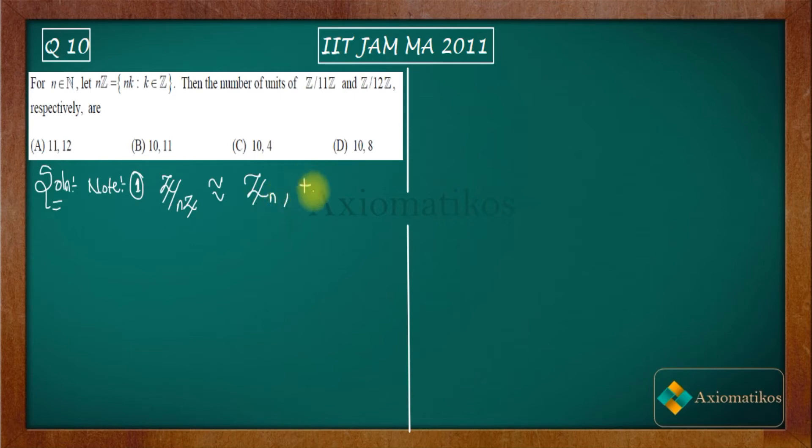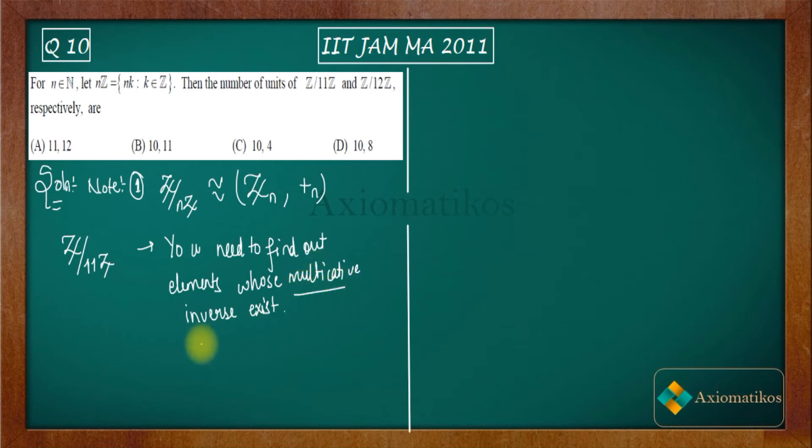So what you have to do is find out units inside Z/11Z, which simply means you need to find out elements whose multiplicative inverse exists. So units actually means all those elements whose multiplicative inverse exist.